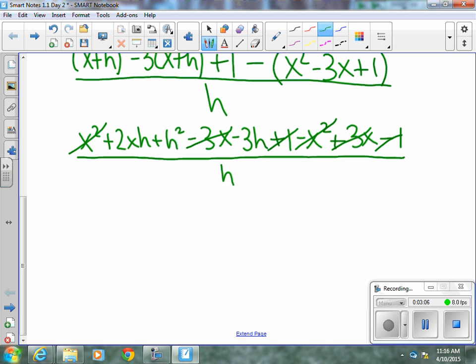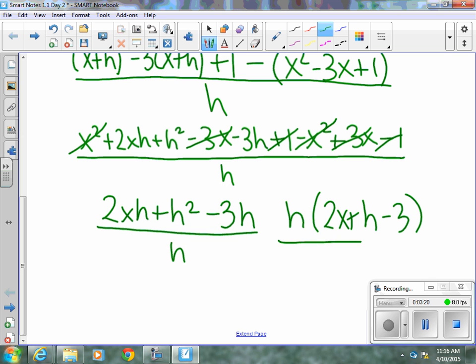So, we are left with 2xh plus h squared minus 3h all over h. We can pull an h out of the numerator. We are left with 2x plus h minus 3 all over h. Those h's cancel and our answer is 2x plus h minus 3. That is the expression of our difference quotient applied to the equation f of x equals x squared minus 3x plus 1.